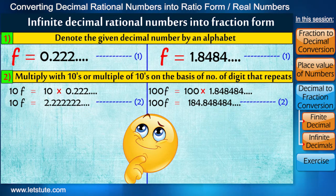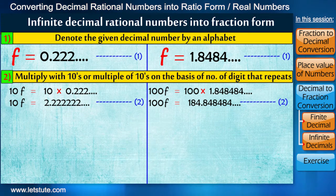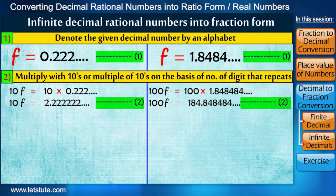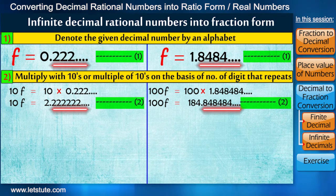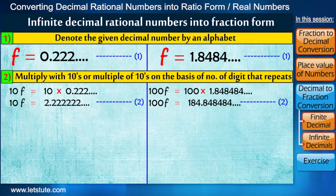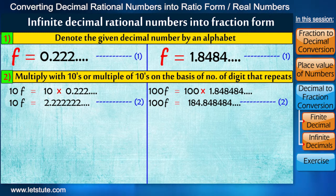So can you guess how we can do this? We can see in equation 1 and 2, after decimal all the digits are same. So if we subtract 1 from 2, then after decimal all the digits will be zero.